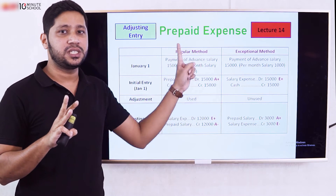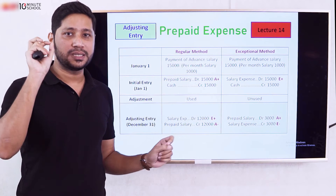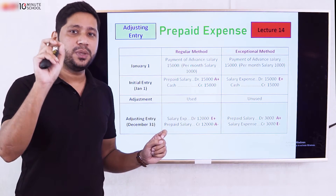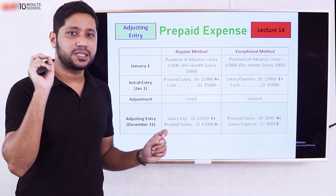We have two entries included here: Salary Expense debit and Prepaid Salary credit, for $3,000. This is the adjusting entry for the prepaid salary under the regular method.